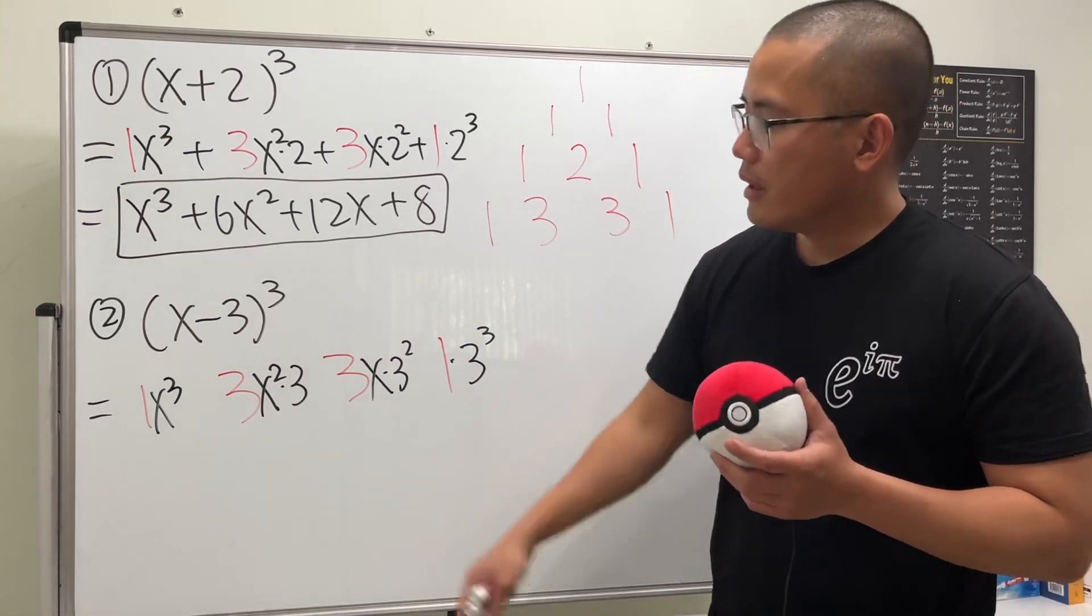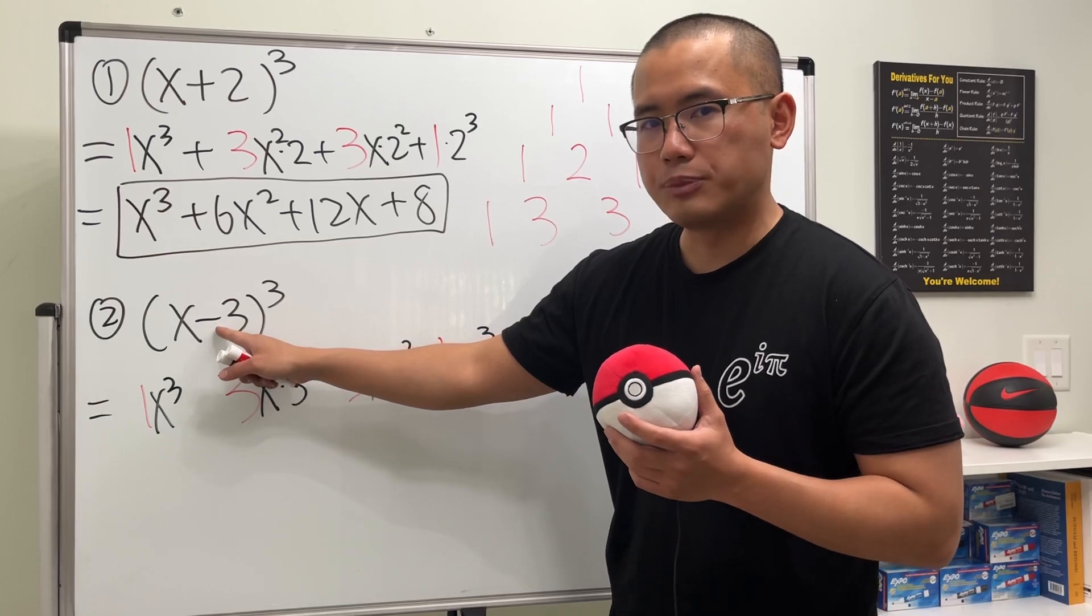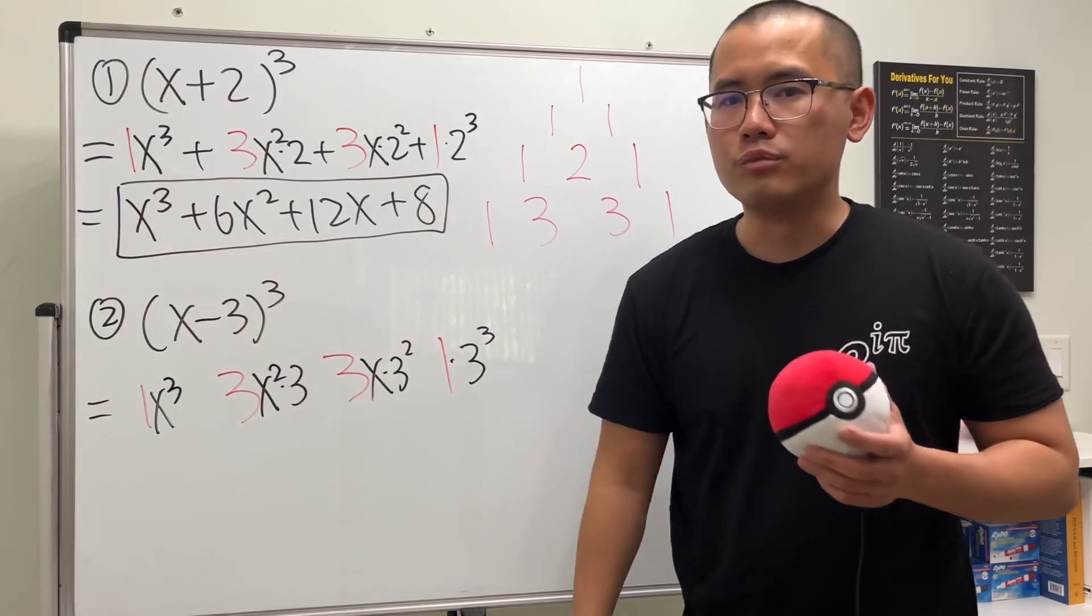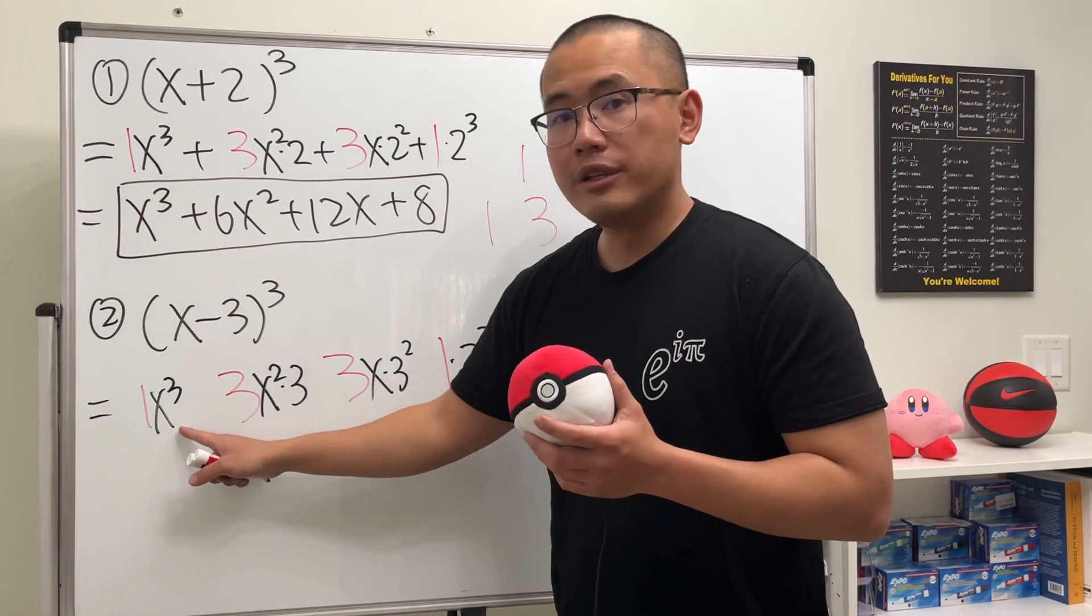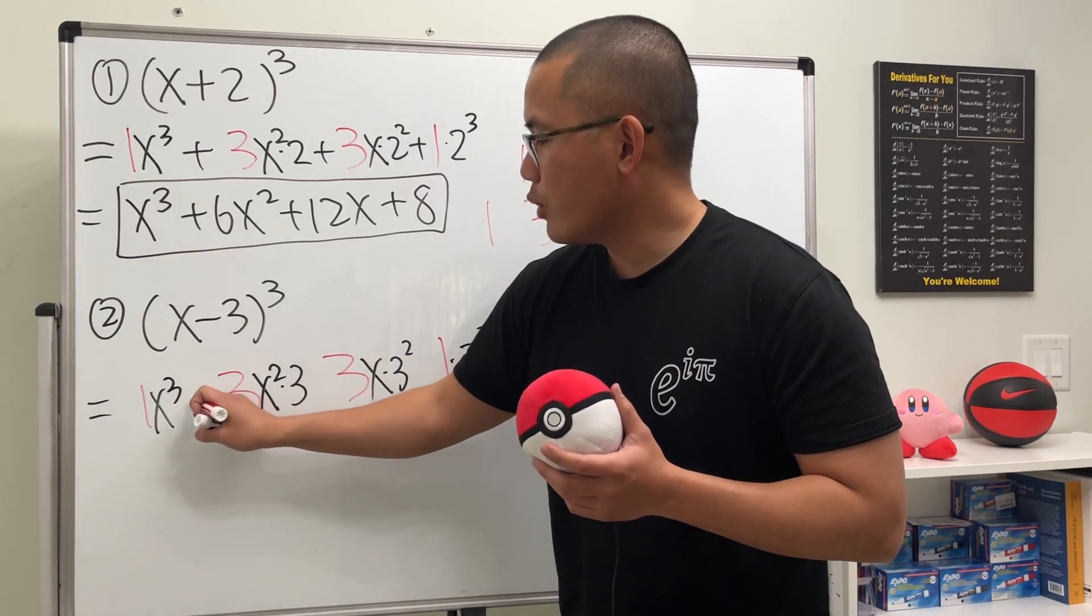Now here's the thing: how are we going to put on the sign when we have a subtraction here? The quick way to remember it is that it alternates. So you see the positive right here, the next one will be minus, and then it alternates.